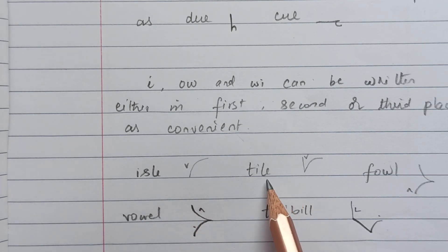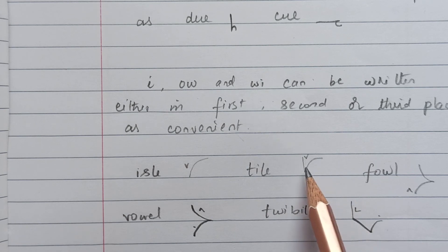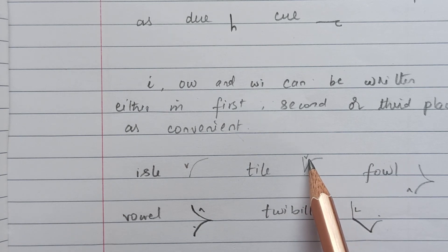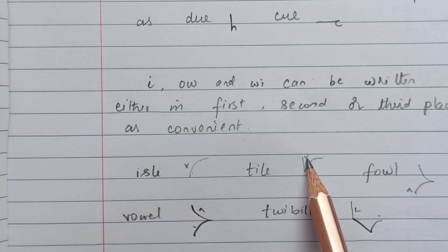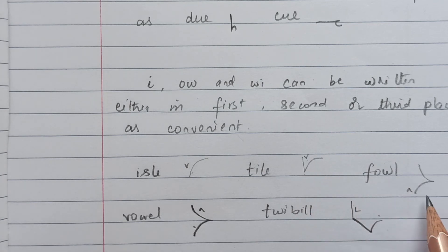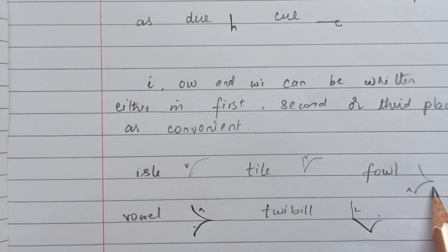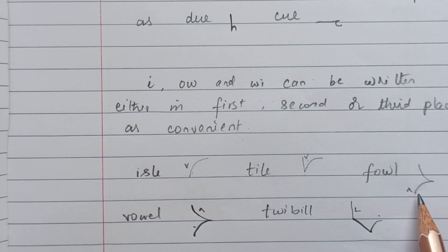Here some example words are given: 'ill' (I and L), 'tile' (T-L-I) — here I is written in the second place, and in 'tile' in the first place. For 'owl,' I have written it differently, and in 'foul' I have written it in the third place (F-OW-L).